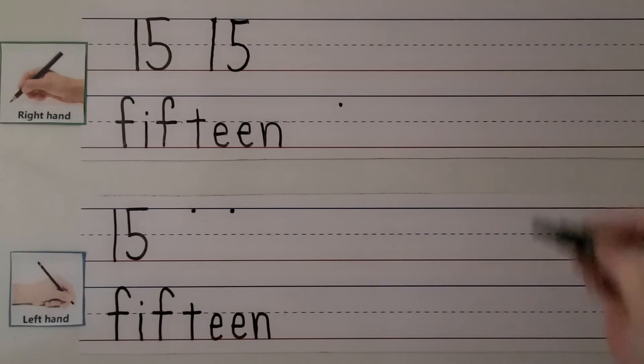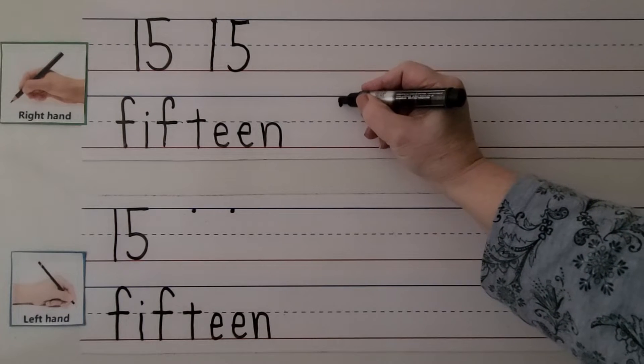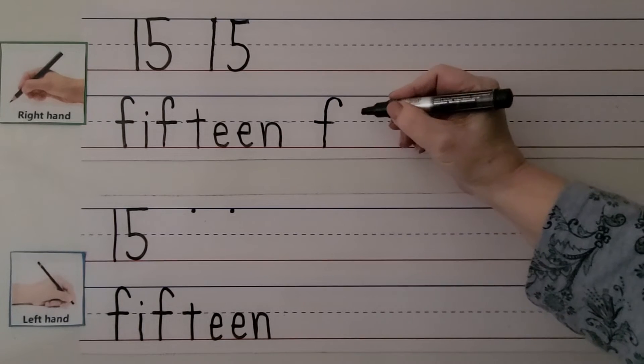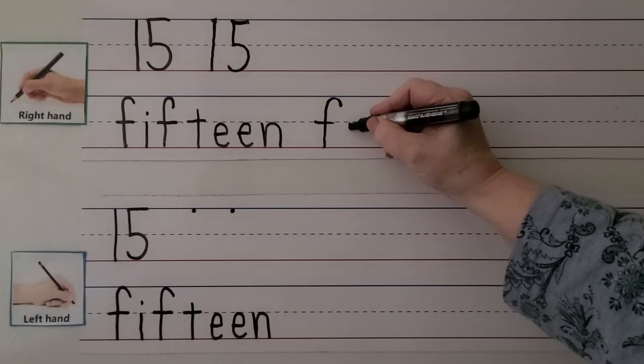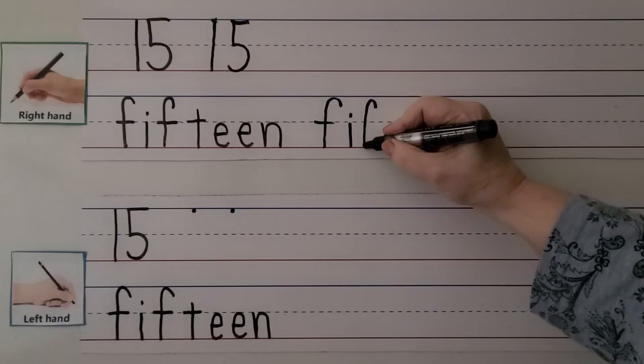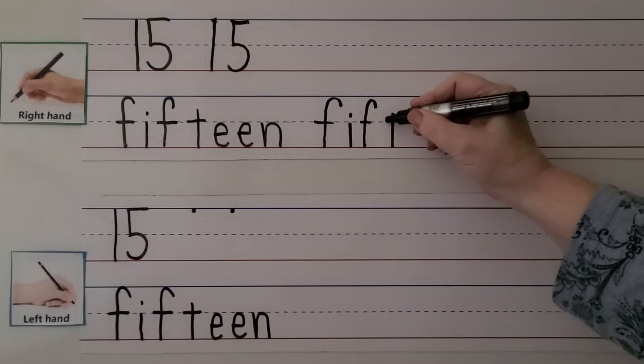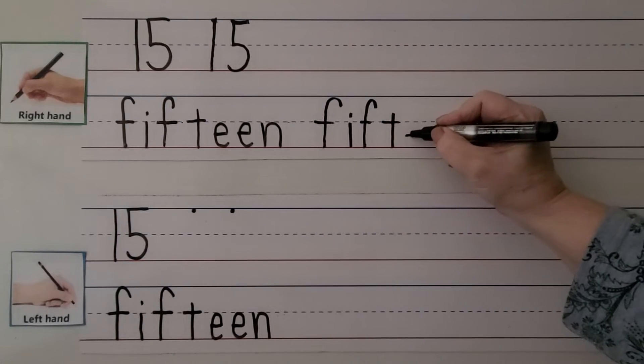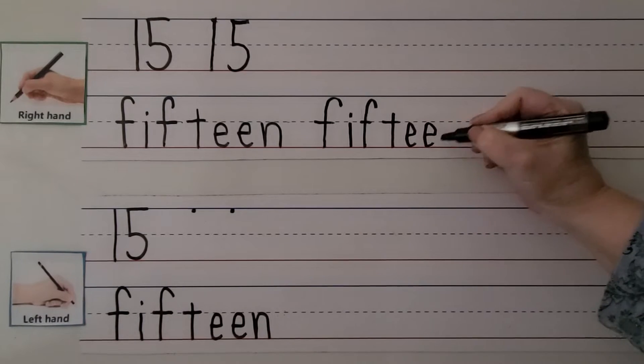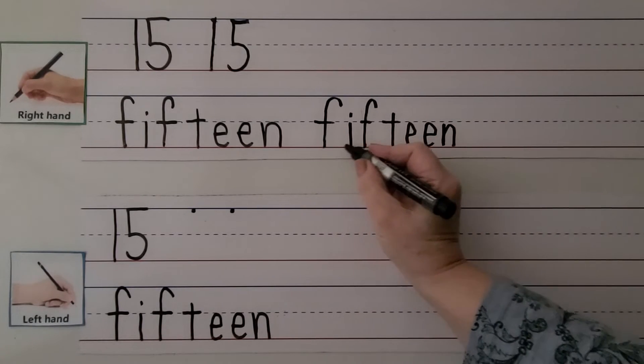15 is a 1 and a 5 next to each other. We can write the word fifteen with our right hand. We make our F starting here. We come up, curl around and go straight down. We cross it coming towards our hand. We have an F, I, another F, T, E, E, N. Fifteen.